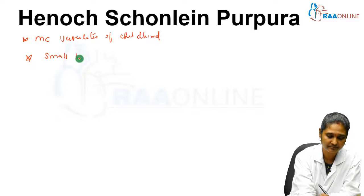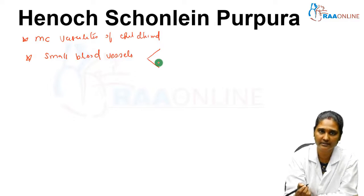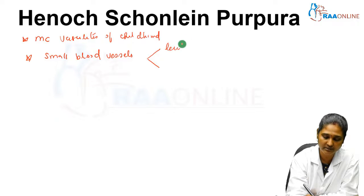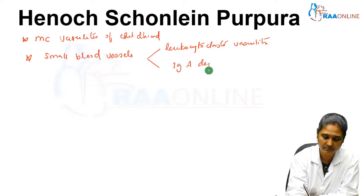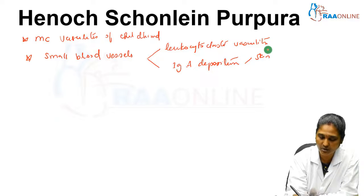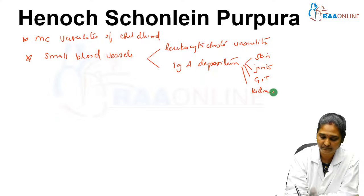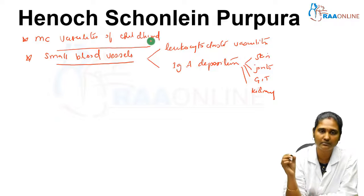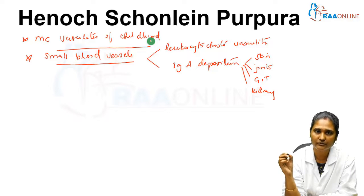HSP mainly involves the small blood vessels. Two important histopathological findings seen in HSP are leucocytoclastic vasculitis and immunoglobulin A deposition. This immunoglobulin A deposition mainly involves the small blood vessels of the skin, joints, GI tract, and kidneys. This is a hallmark of the disease — a most common vasculitis of small blood vessels characterized by leucocytoclastic vasculitis and immunoglobulin A deposition.